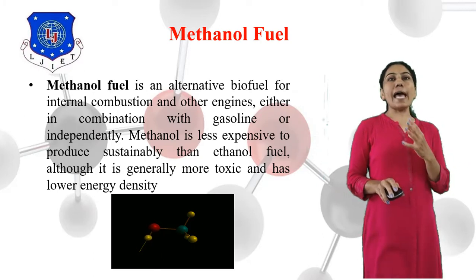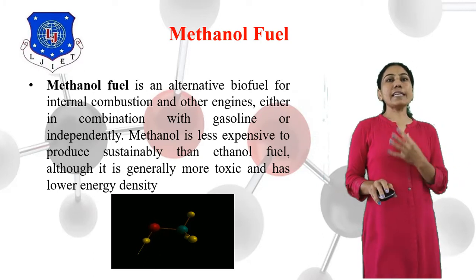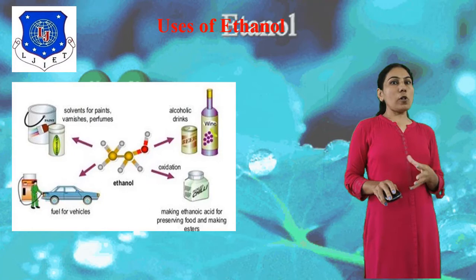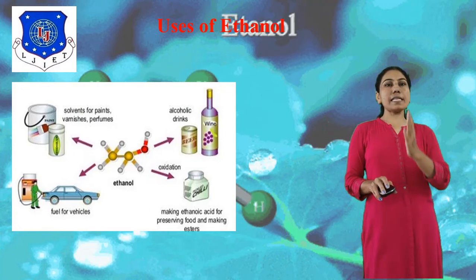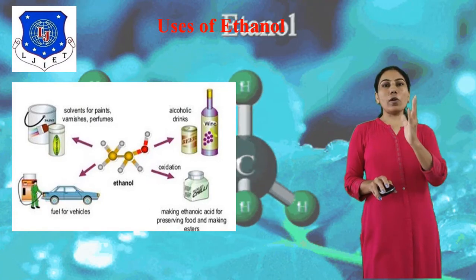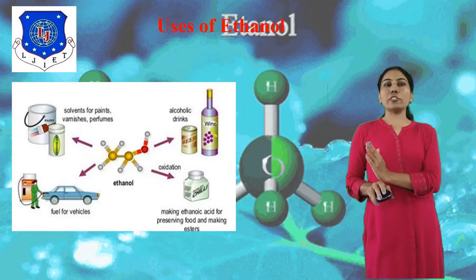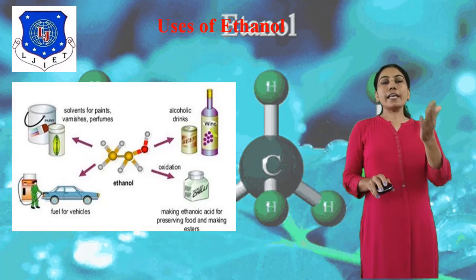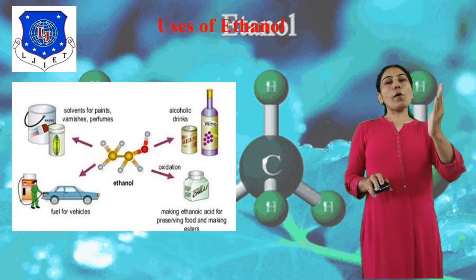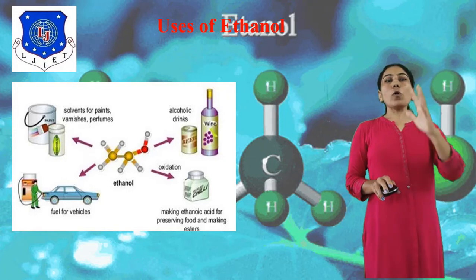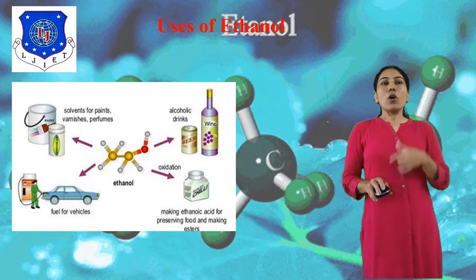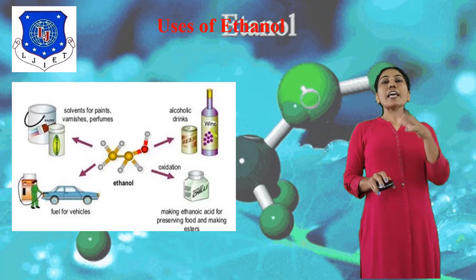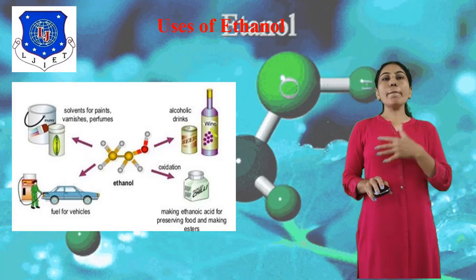Methanol fuel is used in IC engine. Next is the use of Ethanol. You can see the diagram showing the formula of Ethanol, CH3CH2OH. Ethanol has different applications: use as automobile fuel, alcoholic drinks, solvent for paint, and making acetic acid for food and making esters.